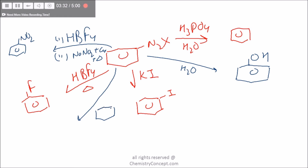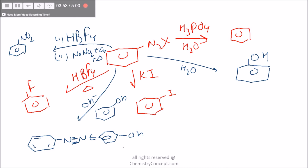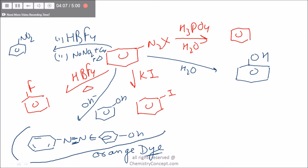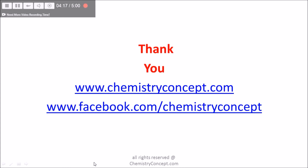If the Diazonium salt is reacted with phenol in the presence of acid or with benzene, we get a special compound — a double bond with an OH group — which is an orange color dye called para-hydroxyazobenzene. This reaction is called azo dye formation. Stay tuned for more videos on physical, organic, and inorganic chemistry, and don't forget to subscribe.